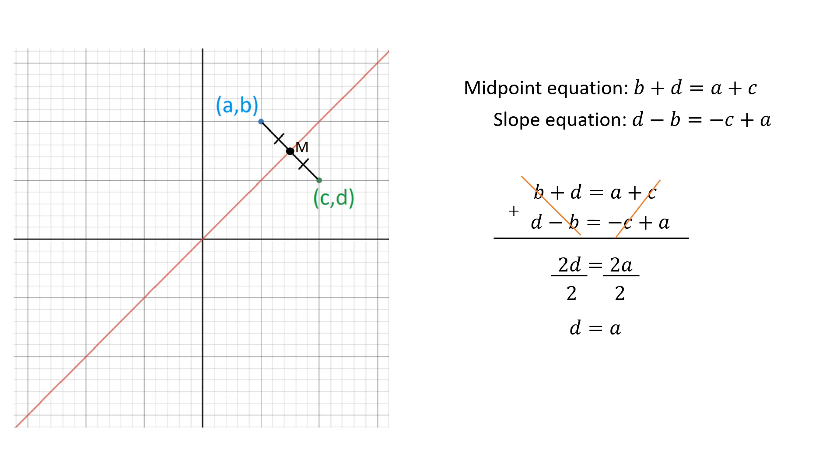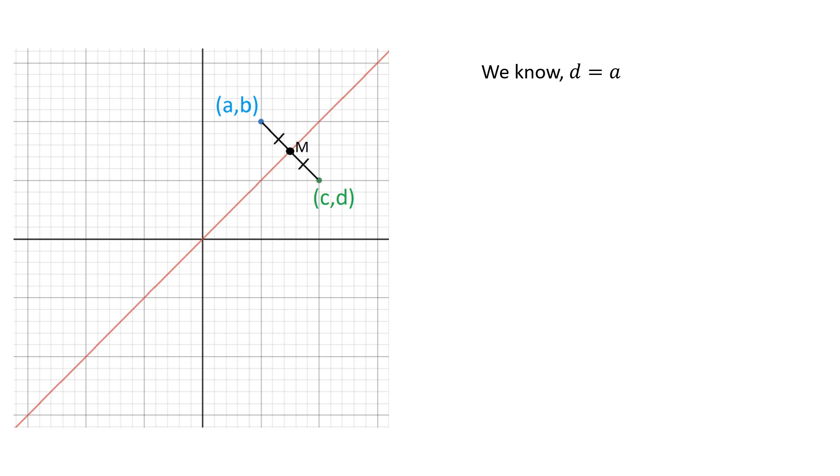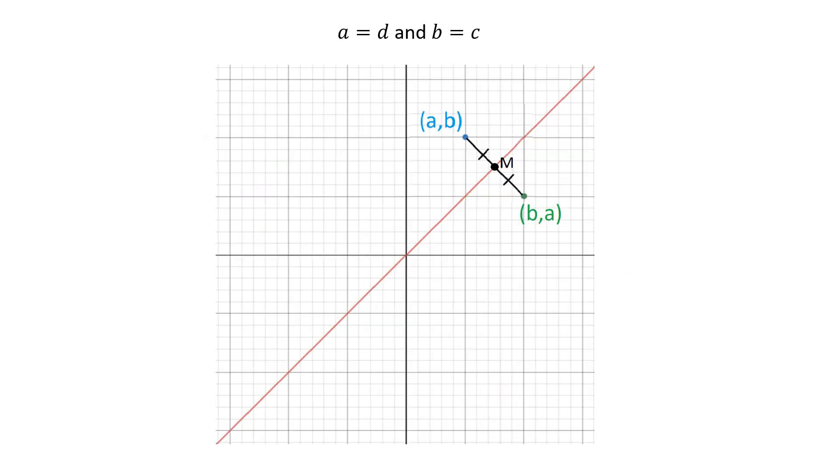We know that d is equal to a. So with back substitution into the midpoint equation, we're going to start with b plus d equals a plus c. But d is equal to a. So I'm going to substitute d in for a. So now I have b plus a equals a plus c. Now if I minus a from both sides, we see that the a's cancel and all that is left is b is equal to c. So there we have it. a is equal to d and b is equal to c.